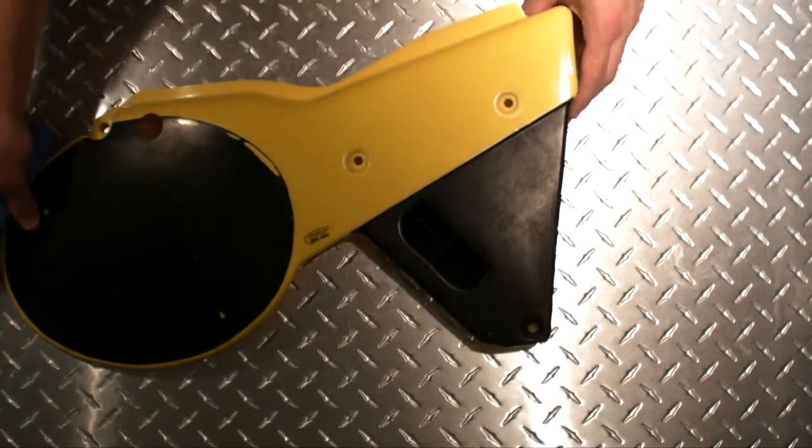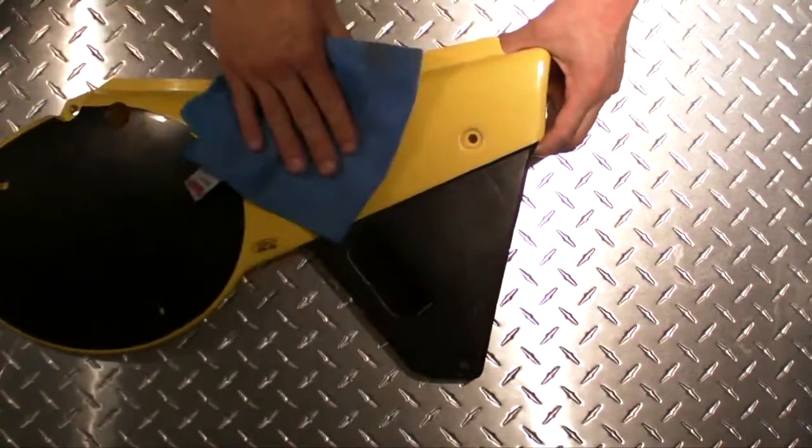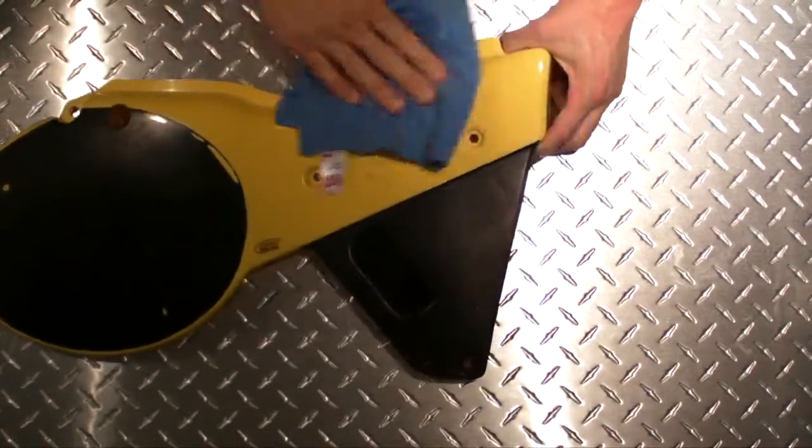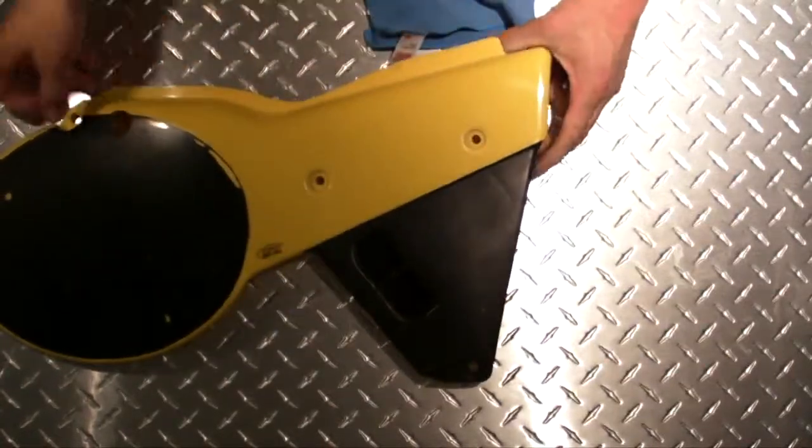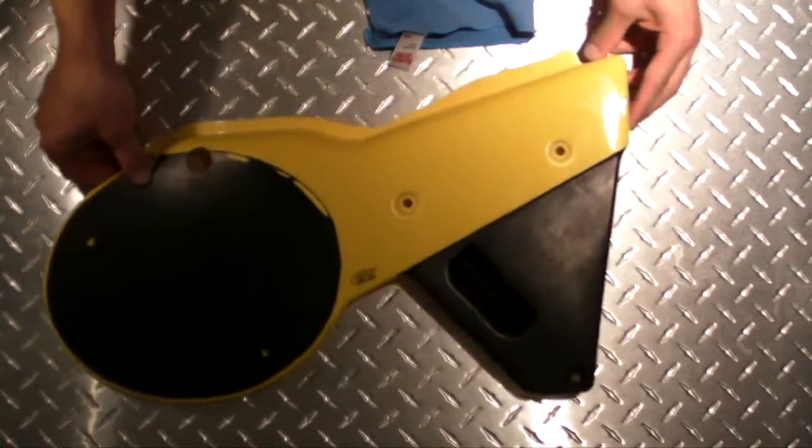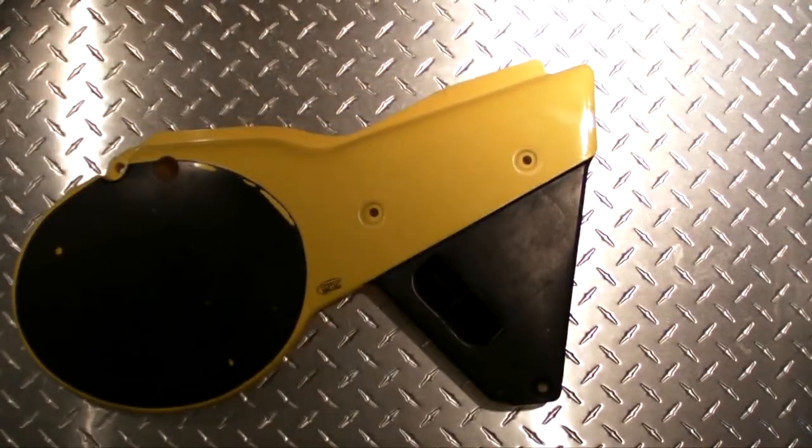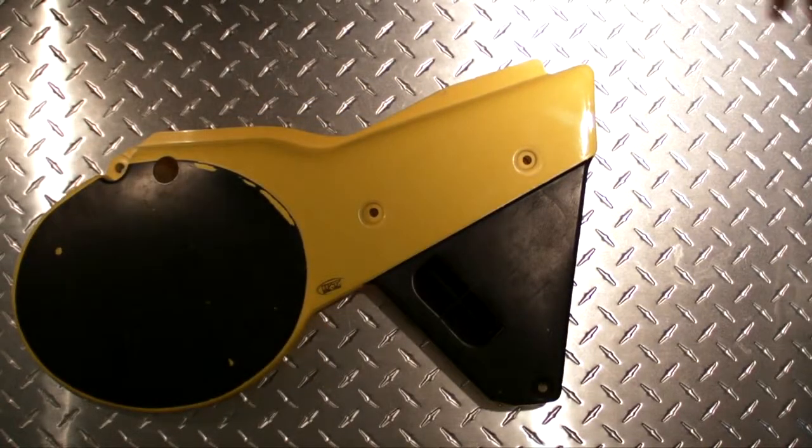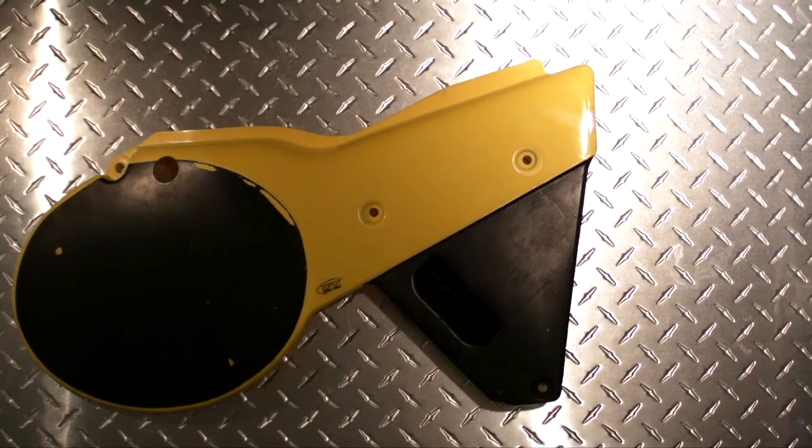This is the end of the installation. You can take your lint-free cloth and go back over the installation, clean it up a little, and as you can see, I'll try and center this the best that I can. It really does make for a new looking side cover.